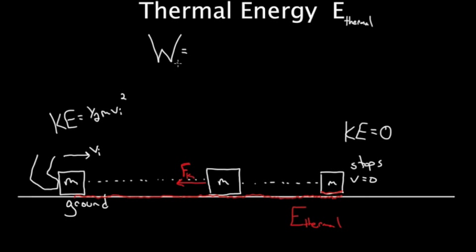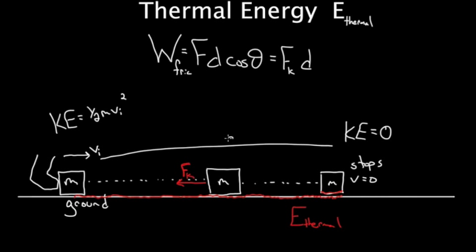If we want to find the work done by friction, because we want to know how much energy it transferred, we're going to take the force times the distance times cosine theta. The force we want, since we want the work done by friction, we need to use the force of friction. D is the distance the box went, so this entire distance this way would be the D we use.